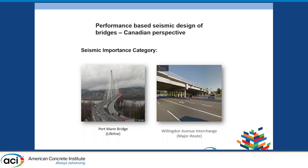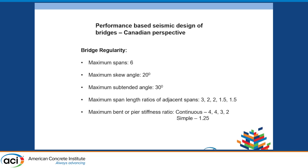There is a bridge regularity clause in the code that looks at what they would call a regular bridge: six spans, small skew angles or subtended angles, and certain ratios for adjacent spans for maximum length or bent-to-pier stiffness ratios. For stiffness ratios, if you have a continuous bridge with four spans, you cannot go beyond a stiffness ratio of four. If you're simply supported, you have to stick to 1.25 no matter how many spans you have.